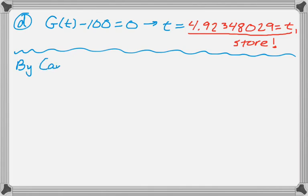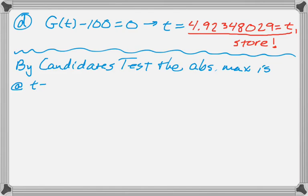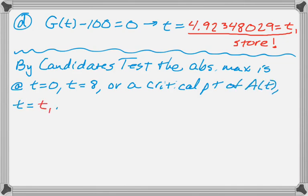Okay, so let's write this up. By candidate's test, the absolute maximum value is either at an end point or at a critical point. So, it's at T equals 0, T equals 8, or at the critical point of A of T, which I found is T equals T1. And I've already written on my paper that T1 is equal to that thing. So, anyone reading it would recognize that.